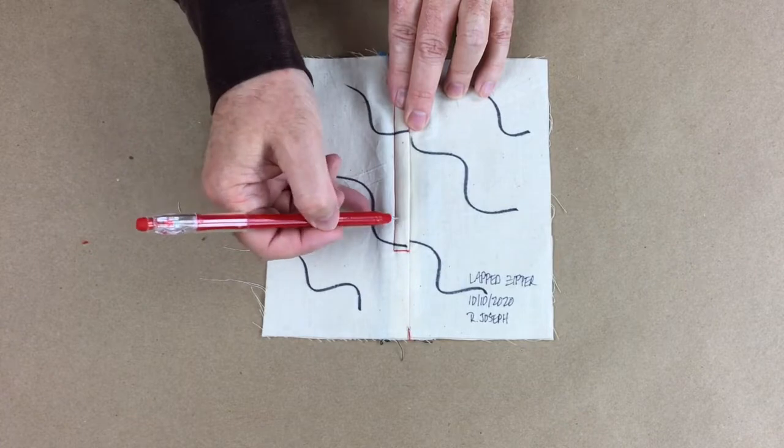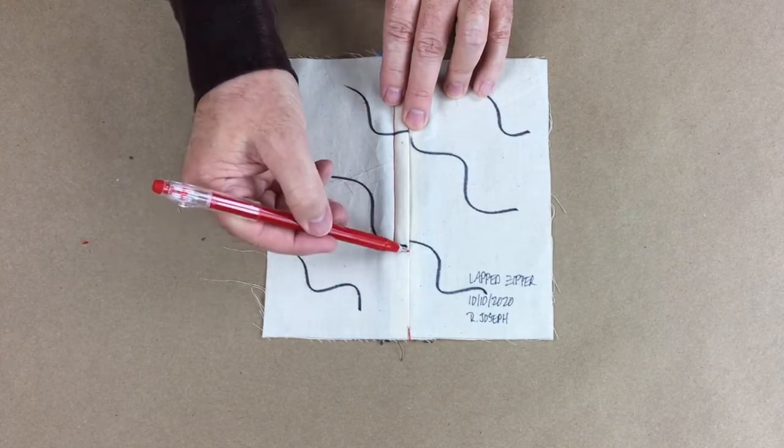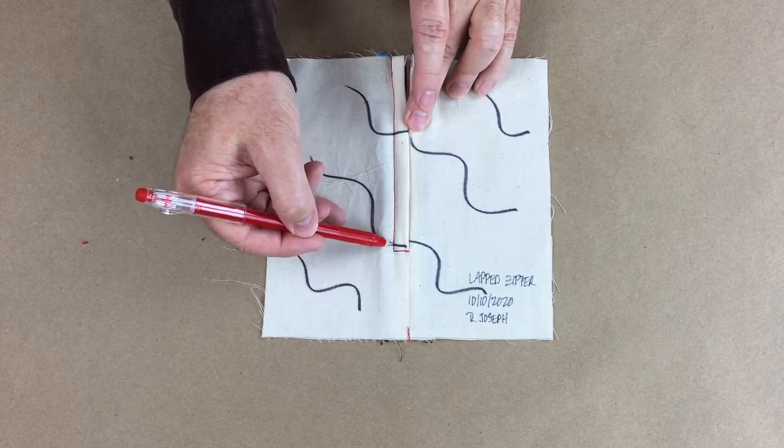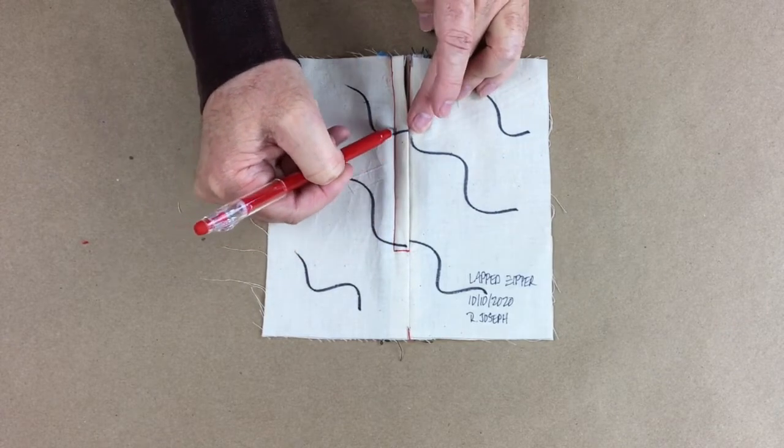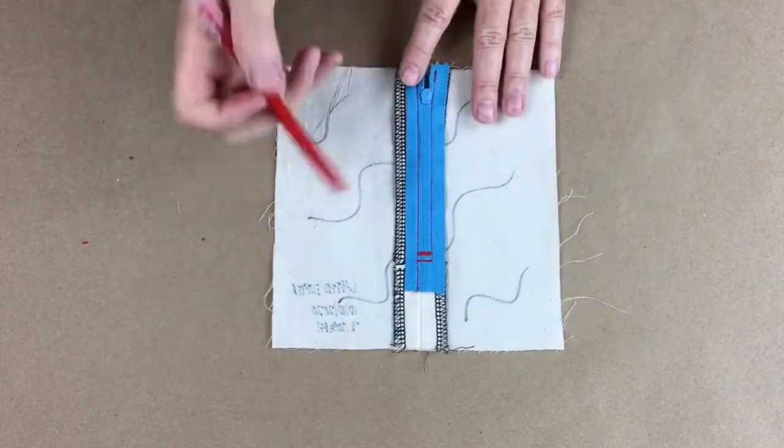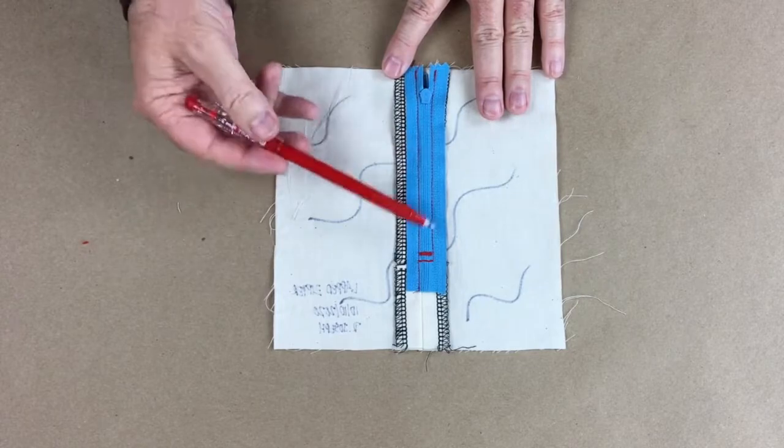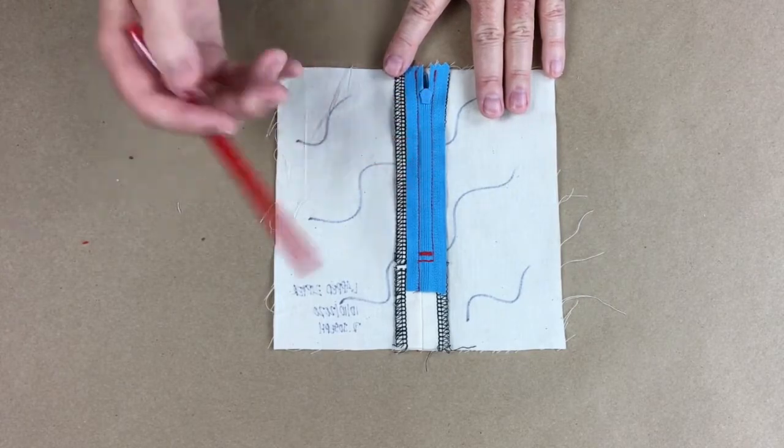If I saw stitching coming over that seam allowance, I would ask you to redo that area. But I have a really good pivot here that goes right up into the zipper. Then I would look underneath how clean it looks, and this is really clean. This is the way I would want to see it.